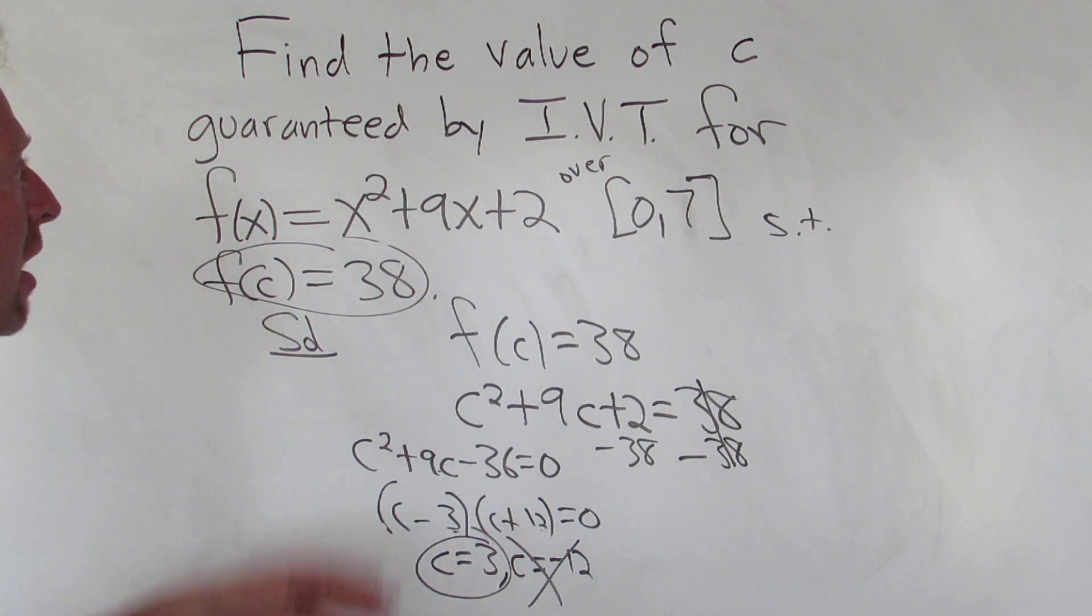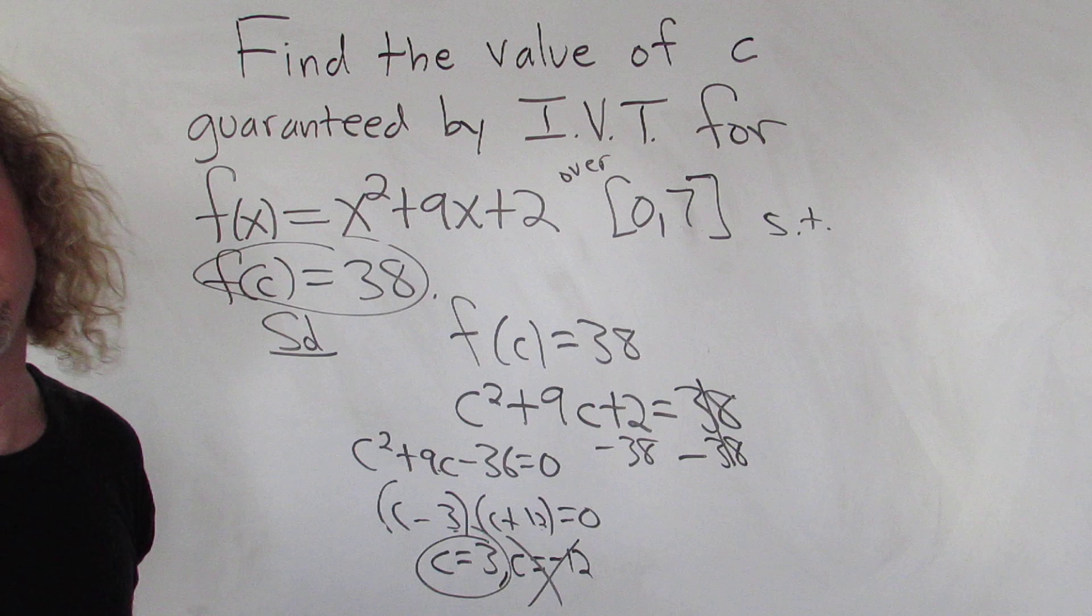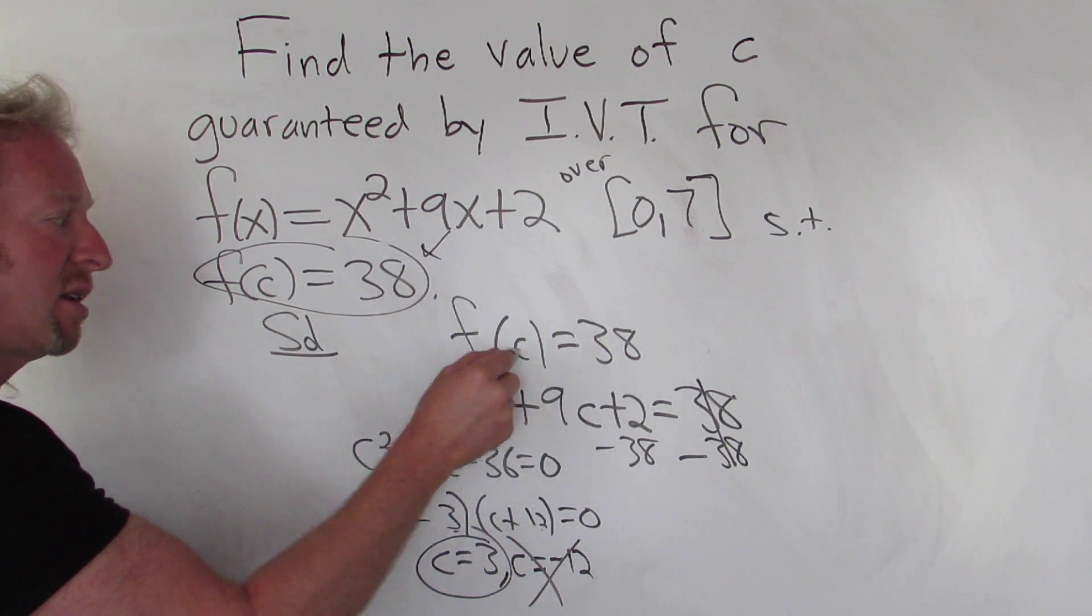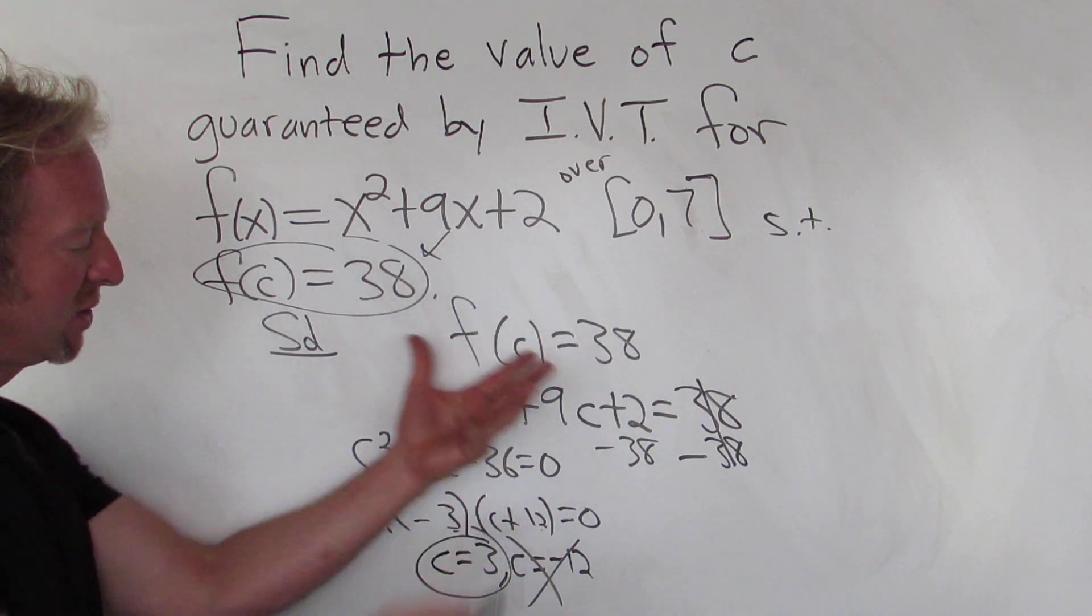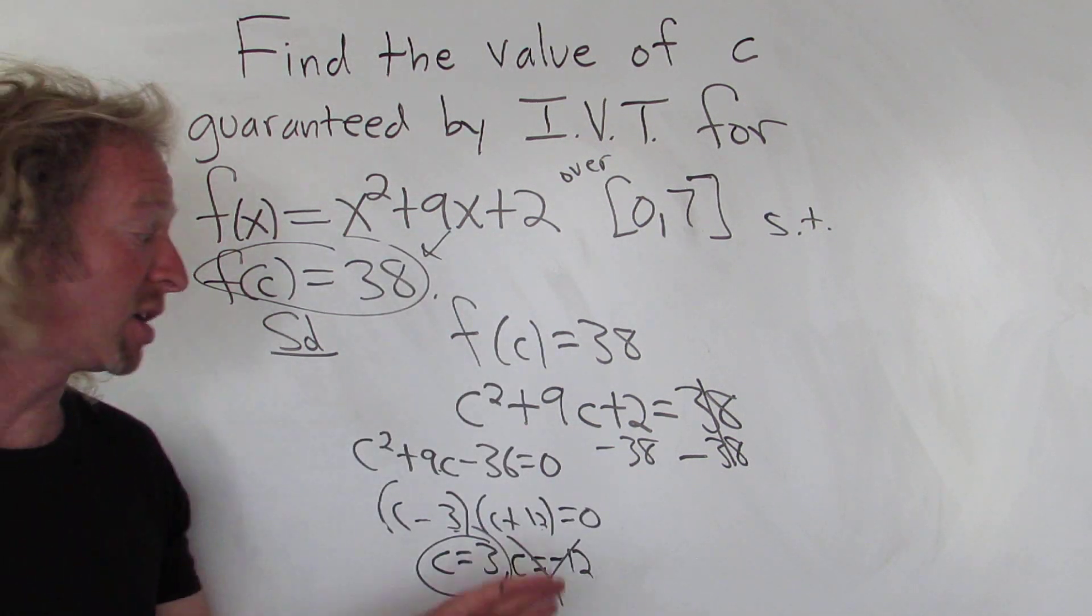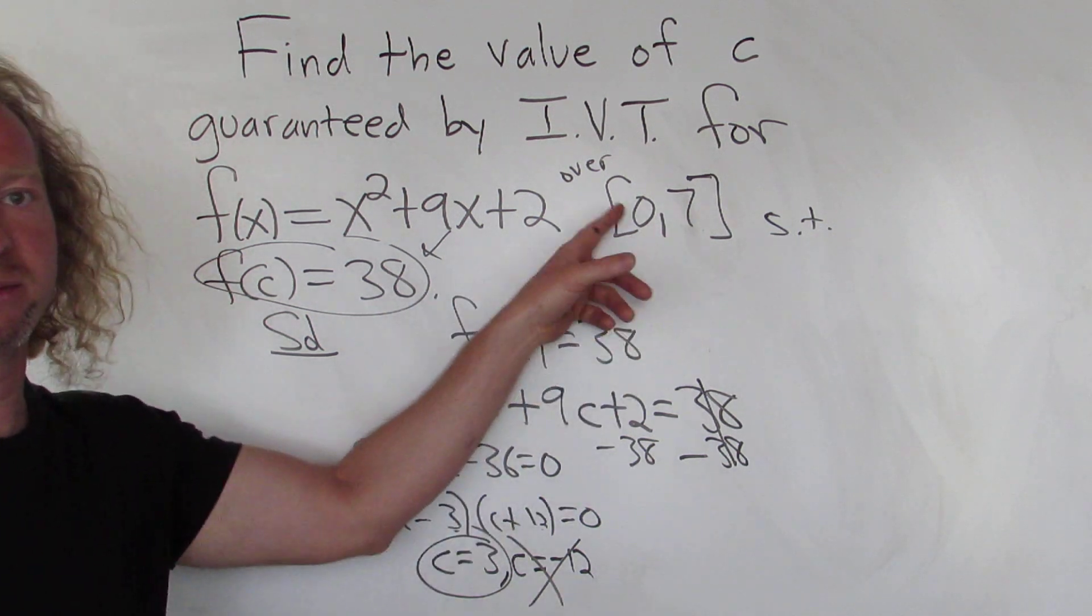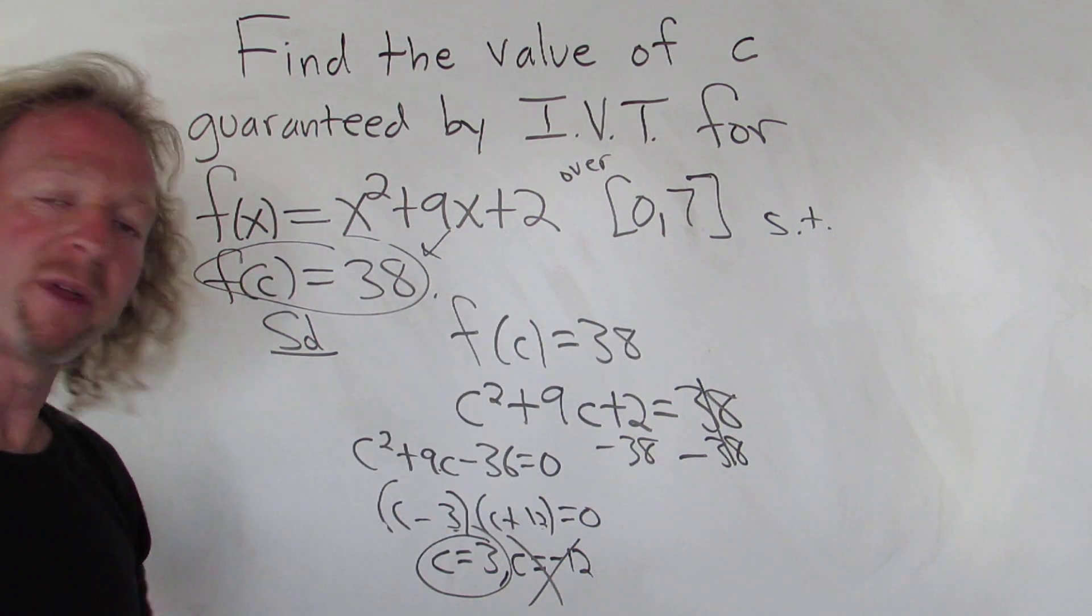So that's how you find the value of c guaranteed by the intermediate value theorem. All you do is you just take this, set it equal to, just write it down again, and then just replace all your x with c's, and then just solve for c. Make sure that your answer is between your two numbers. Make sure it's in your interval. I hope that helps.